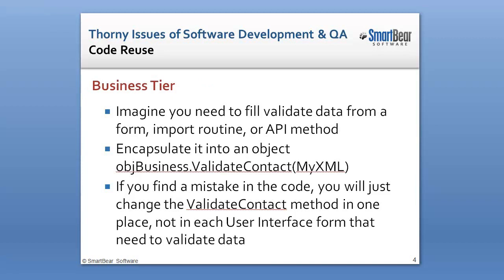Now let's talk about your business tier. Imagine that you had to validate things. For example, if you're adding a contact, you're probably going to validate that the contact name was entered, that the phone number was in the right format, and that the email address is a valid format — in other words, it has an ampersand and a period. In that contact management system, you might have a place where you add contacts and another where you edit contacts. You can see that you'd have to put that same validation logic in both of those forms if you didn't have a business tier.